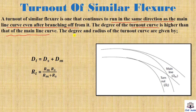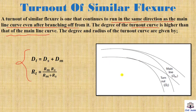The degree and radius of the turn out curve are given by two formulas. Dt equals degree and radius; Dt equals Ds plus Dm. This relates to the straight track and the radius of the straight track. It is a simple formula from which you will get the values.